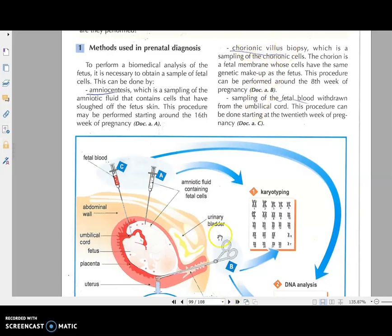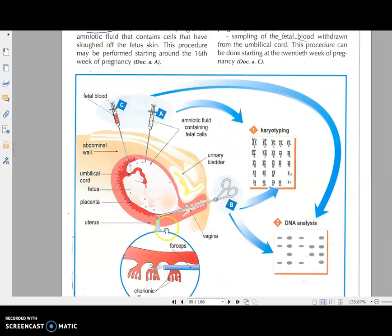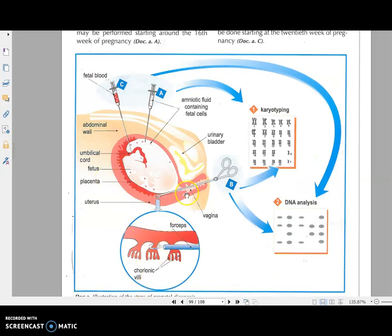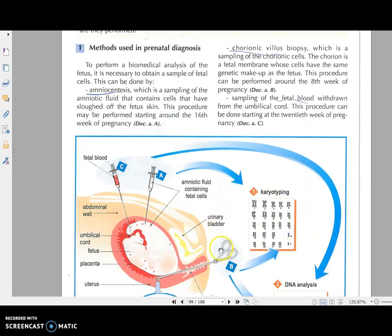The second technique is called chorionic villi biopsy. The baby is surrounded by placenta. Around the placenta there is a layer of cells called chorion. The chorion has projections like hair called chorionic villi. Simply the doctor inserts a forceps through the vagina and takes cells from the chorion, which are cells from the baby. This is done at week 8, which is the second month.